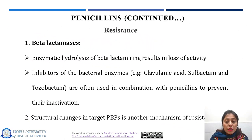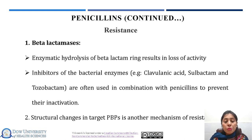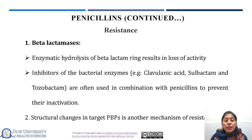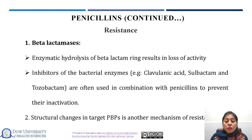Now we will talk about the resistance mechanisms by which bacteria acquire resistance against penicillins. There are two mechanisms. One is the production of beta-lactamase enzymes. Beta-lactamases are enzymes produced by bacteria that cause hydrolysis of the beta-lactam ring, resulting in loss of activity of penicillin. To overcome this, inhibitors of these enzymes have been introduced, including clavulanic acid, sulbactam, and tazobactam. These inhibitors are often used in combination with penicillin to prevent its inactivation. Another mechanism is structural changes in the target penicillin binding proteins. Bacteria acquire resistance by changing the structure of the penicillin binding proteins, so penicillin does not recognize its target, and the drug does not reach inside the cell.